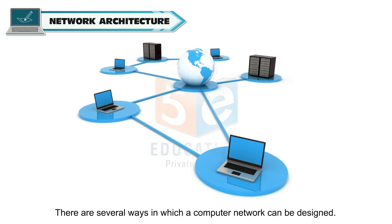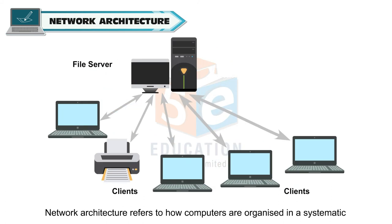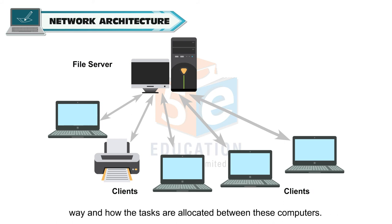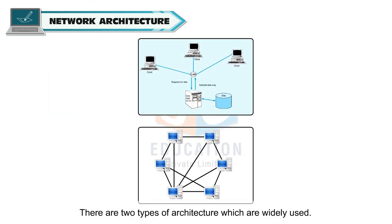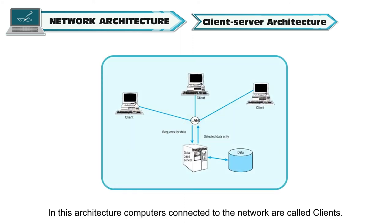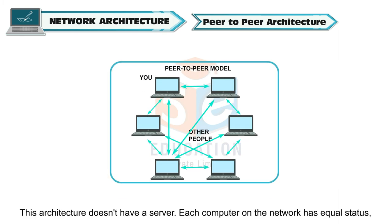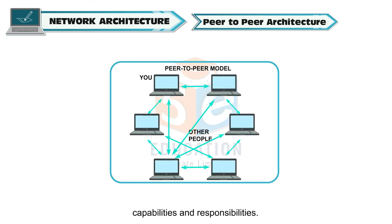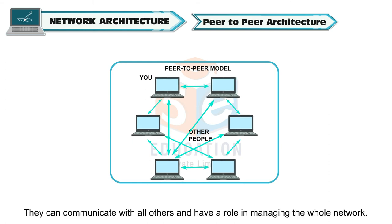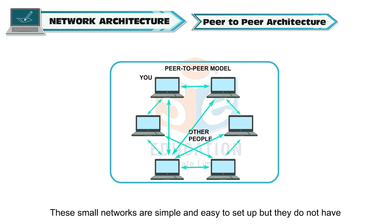Network Architecture refers to how computers are organized in a systematic way and how tasks are allocated between these computers. There are two types widely used. Client-Server Architecture: computers connected to the network are called clients; the clients send requests which are processed by the server. Peer-to-Peer Architecture: this architecture doesn't have a server; each computer on the network has equal status, capabilities, and responsibilities. They can communicate with all others and manage the whole network. These small networks are simple and easy to set up, but do not have the powerful features available in client-server networks.